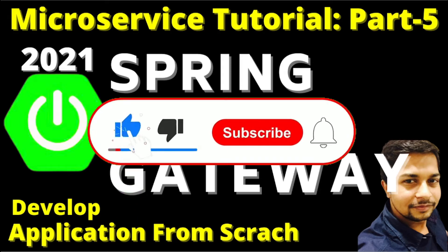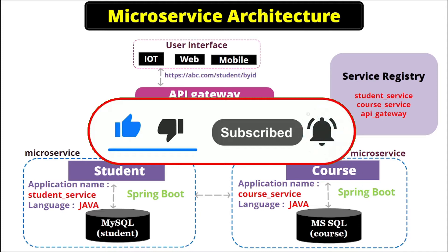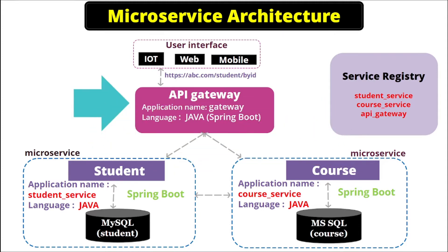Before moving forward, I would like to request you to please like and share this video and subscribe to the channel. In this video we are going to create an API Gateway. We will keep the application name as 'gateway' and the language we will use is Java Spring Boot. We already created the first microservice Student and the second microservice Course, so now let's go create the API Gateway.